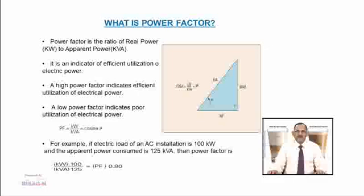Power factor is the ratio of real power (kW) to apparent power (kVA). It is an indicator of efficient utilization of electric power. A high power factor indicates efficient utilization of electric power, whereas a lower power factor indicates poor utilization. The formula for power factor is: PF = kW / kVA, which equals the cosine of the angle between kW and kVA.